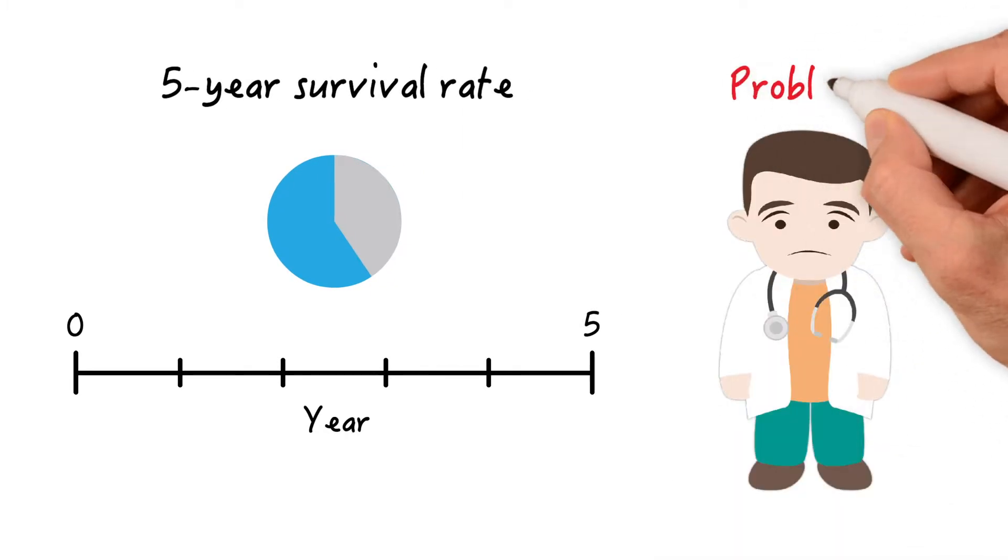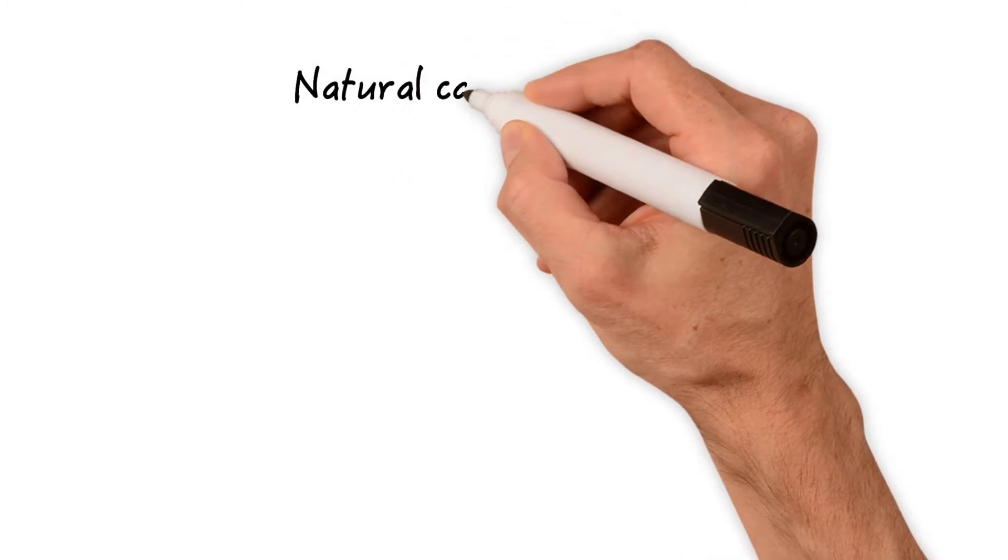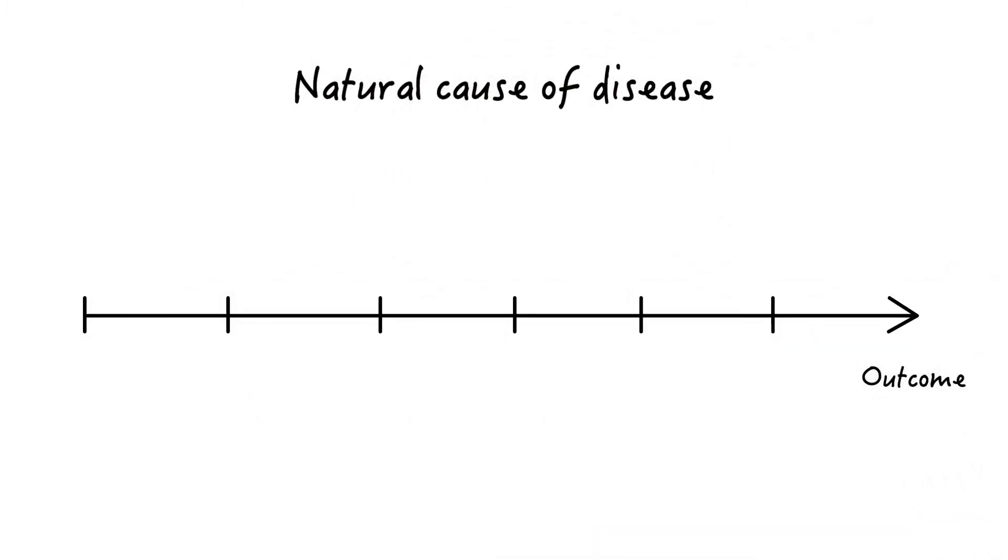Now, there are certain problems associated with the 5-year survival rate. This is the natural course of a disease like cancer. The 5-year period starts at diagnosis. However, the disease itself starts earlier.